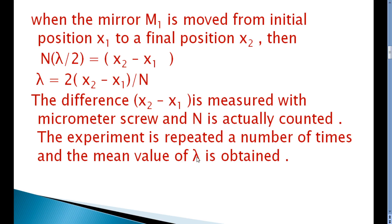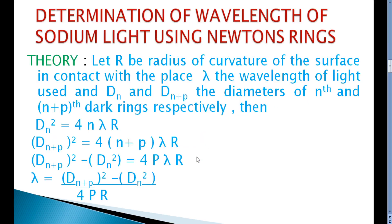The experiment is repeated a number of times and the mean value of lambda is obtained. In this way, we can calculate the wavelength lambda. Next: determination of wavelength of sodium light using Newton's rings. Using Newton's rings, we calculate the wavelength of sodium light.